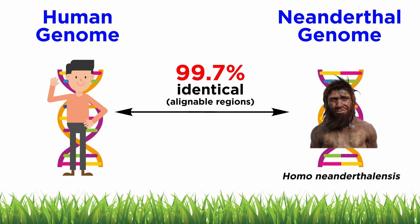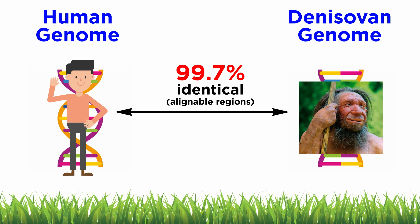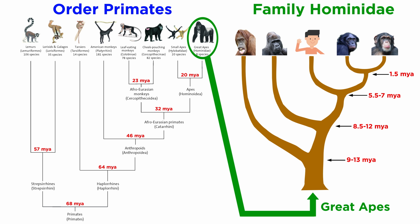Fascinatingly, we have been able to pull DNA samples from some of our extinct relatives as well. Homo neanderthalensis, as expected, is more closely related to us than it is to chimpanzees at 99.7% alignable regions. The same is true for Denisovans, another extinct hominin species. So genetics corroborates morphology, nested hierarchies, and the notion that humans are primates, more specifically apes.